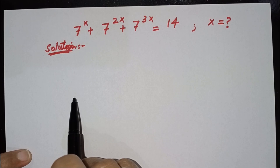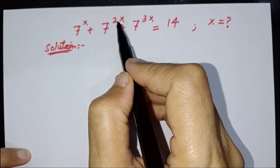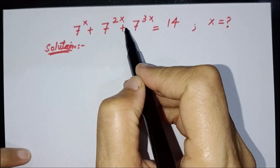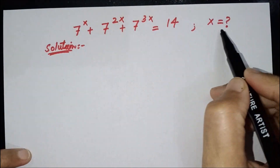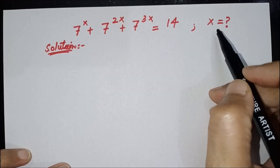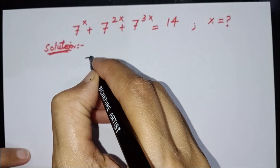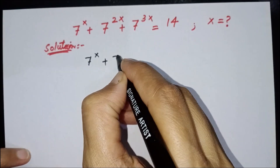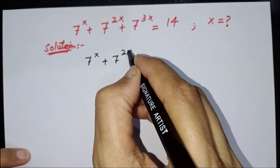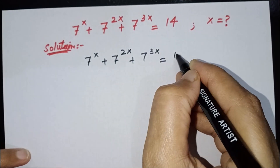Hello everyone, welcome back to my channel Brain Equation. Today we are going to solve the equation: 7 to the power x plus 7 to the power 2x plus 7 to the power 3x is equal to 14, where x is unknown and we need to calculate x.